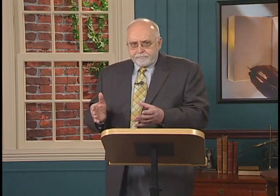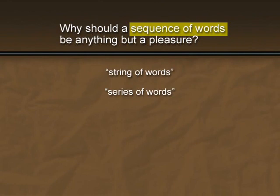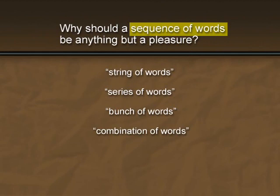Going back to Stein's "Why should a sequence of words be anything but a pleasure?" — in place of "sequence of words" she might have said "string of words," or "series of words," or "bunch of words," or "combination of words," or she might just have said "Why should words be anything but a pleasure?" — leaving out "sequence" altogether. But she chose the word "sequence" over a number of other possibilities, just as she chose to use the word "pleasure" over "gratification," "satisfaction," "joy," "delight," or any number of other words suggesting a positive experience.